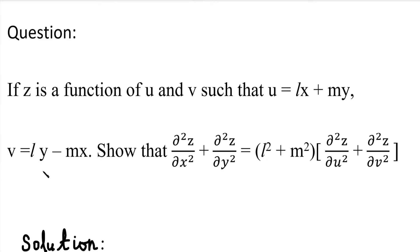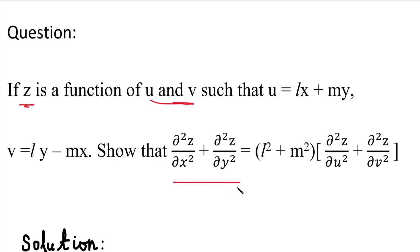In the question, u and v are two values given in terms of x and y. And z is a function of u and v, but u and v are functions of x and y. We need to show that ∂²z/∂x² + ∂²z/∂y² equals (l² + m²) into (∂²z/∂u² + ∂²z/∂v²).